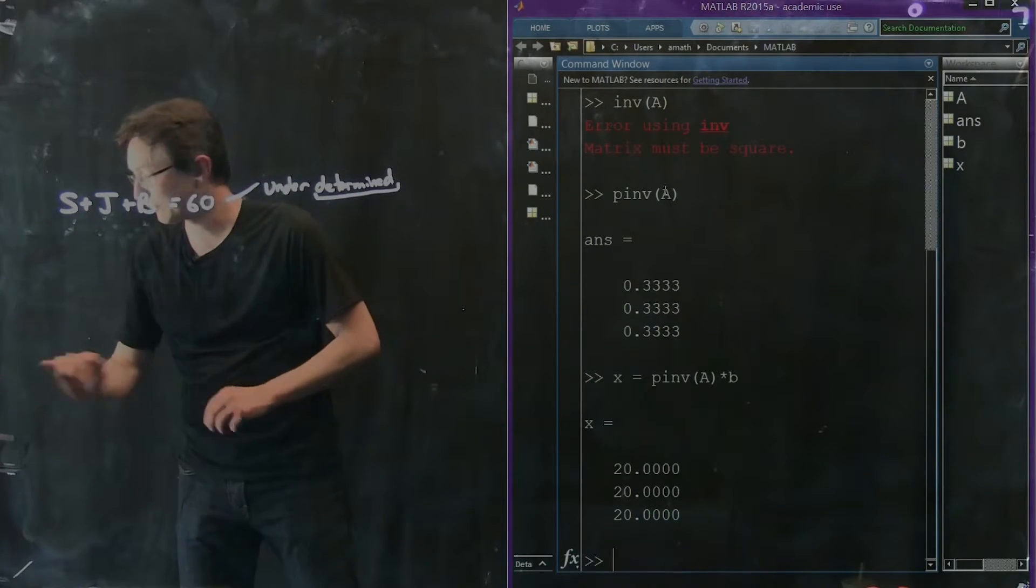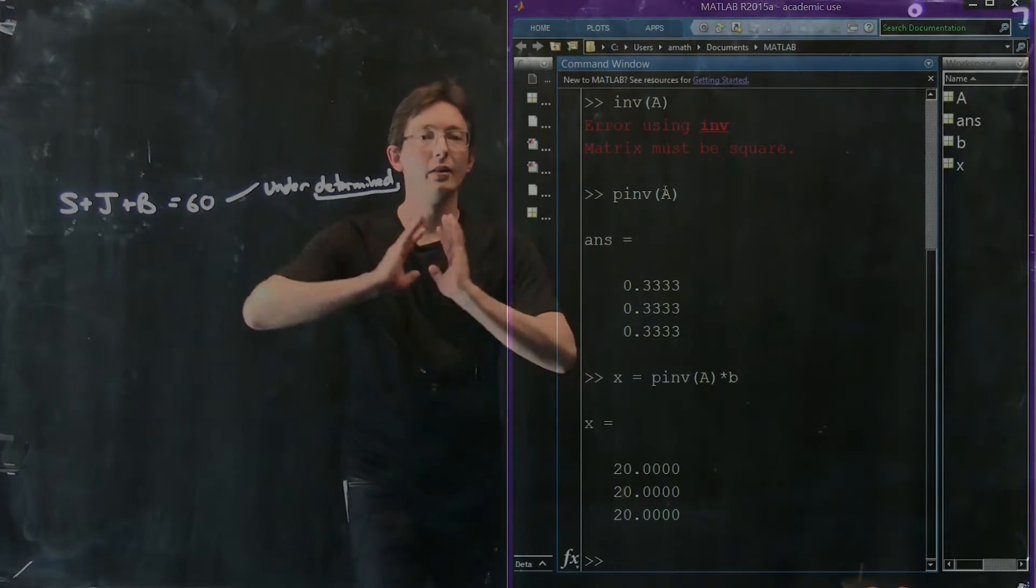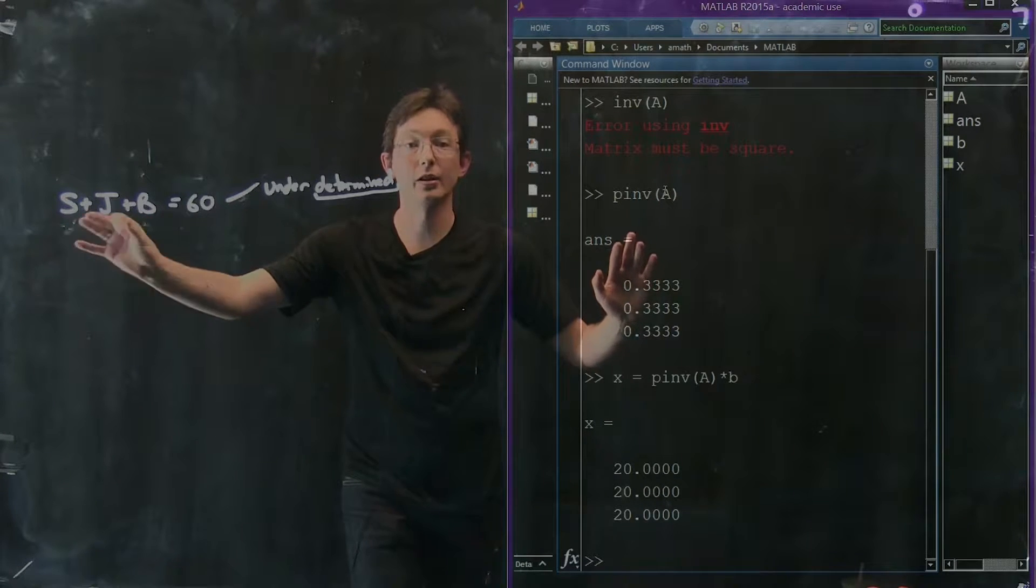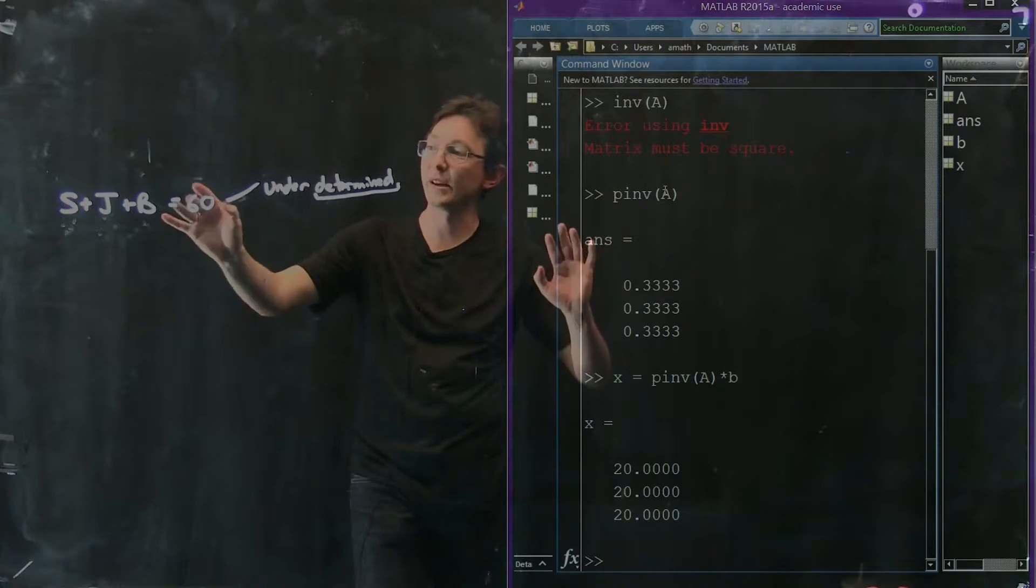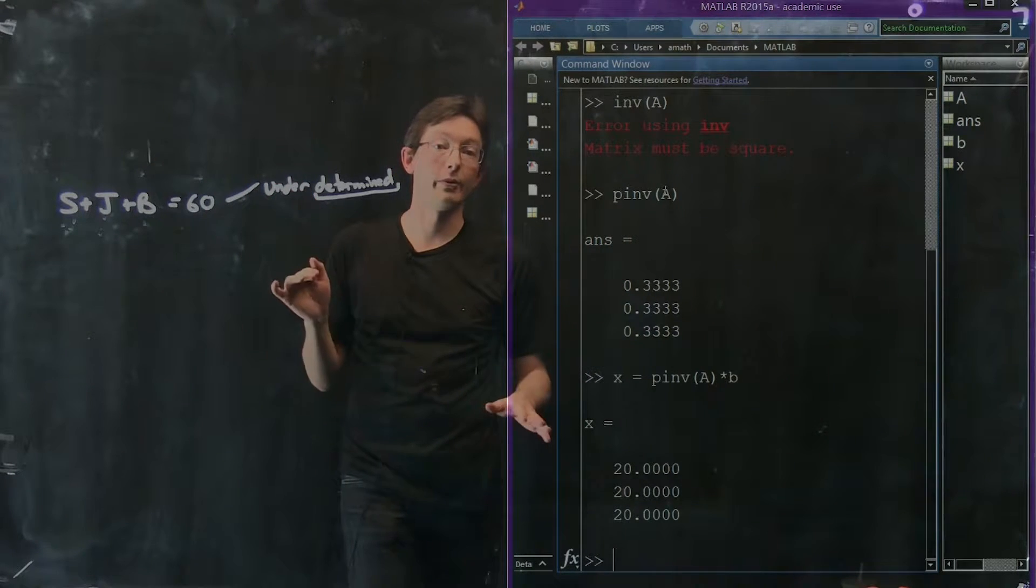And I should get another solution for Sally, John, and Bob. So the pinv times B solution says, well, let's make them all equal. I have no bias towards Sally, John, or Bob. So they're all equal. And the best solution is they're all 20. Sally's 20, John's 20, Bob's 20.